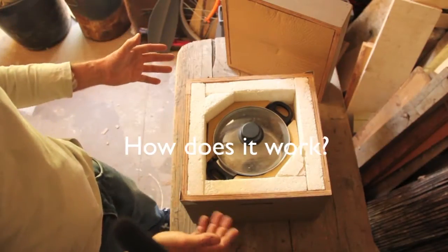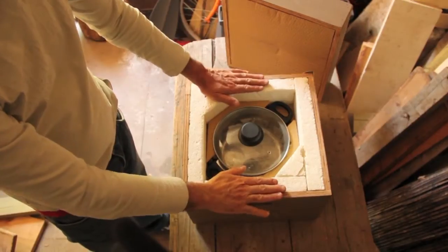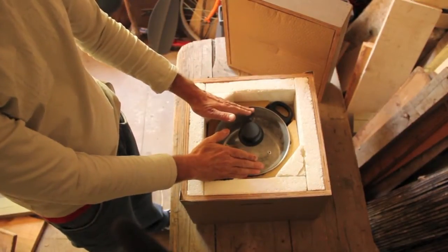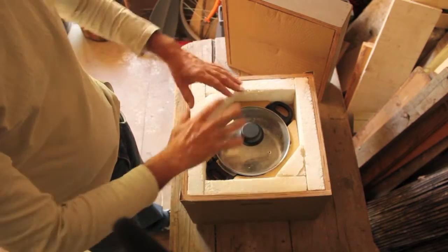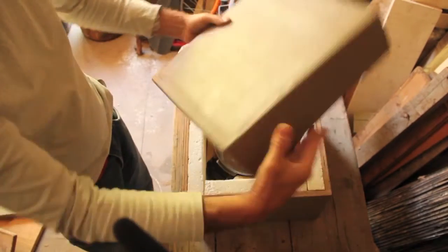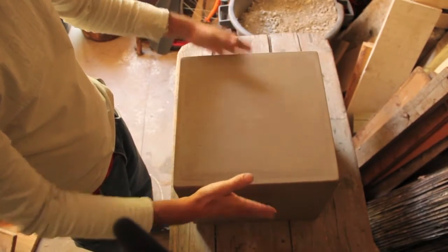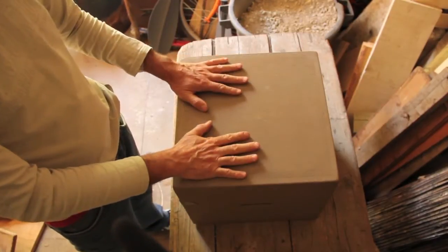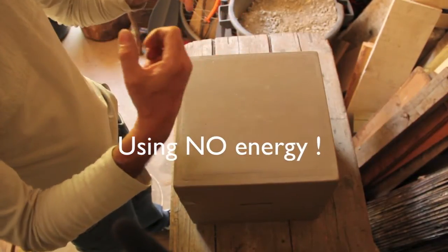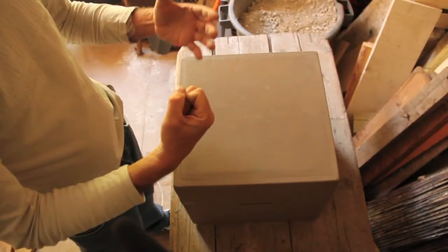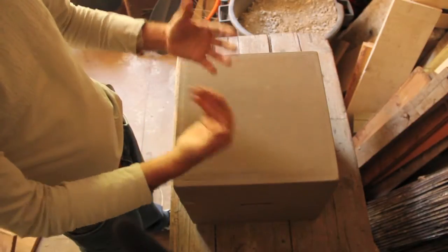How does it work? The insulation is going to keep the heat in the pot. Therefore, when all this is closed up, the cooking continues without any energy. It's going to use the energy which is trapped in the food to continue to cook.